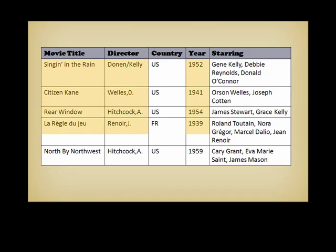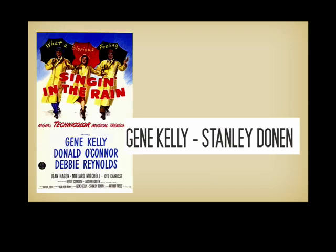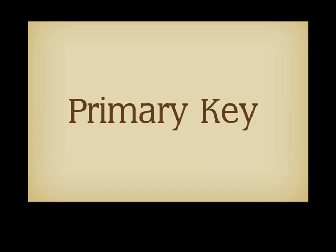Title, director and year may seem a better choice, except that director isn't as simple a characteristic as it may look. Some movies have several directors, and it may lead to ambiguities. Title, country and year look reasonable. It is very unlikely, not least for commercial reasons, that two movies with exactly the same title will be produced the same year in the same country. It is sometimes possible to find several groups of characteristics that uniquely identify a row in a table. You are free to choose the group that you find the most convenient as the main identifier, and this group of characteristics is called the primary key.